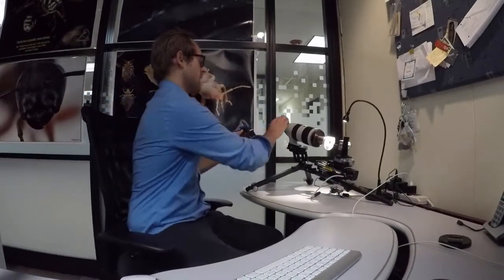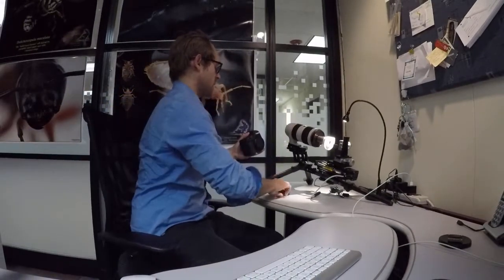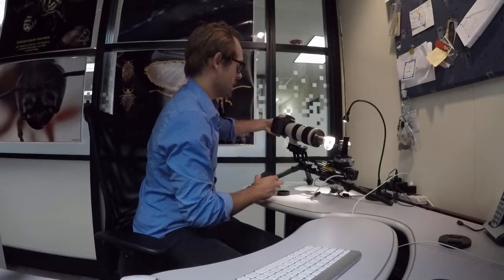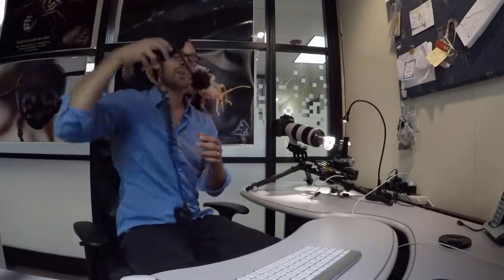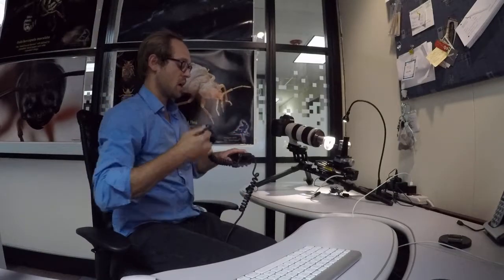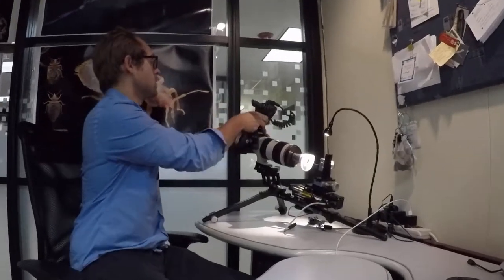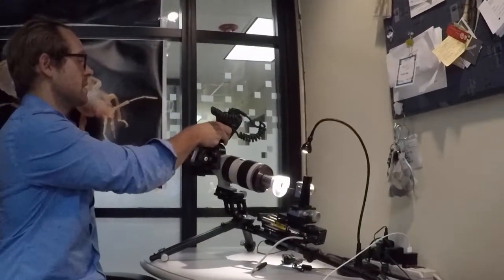Next thing we're going to do is take our camera body. Again as always we want to be very fast about this transition process but careful at the same time. So we'll take our camera body and position it on the back. The next thing we're going to do is take our flash, make sure that it's loaded with four fresh AA batteries. We always use rechargeable AA's. You're going to mount that on the top and tighten it down.